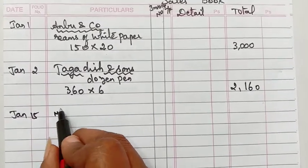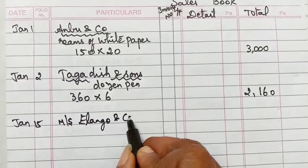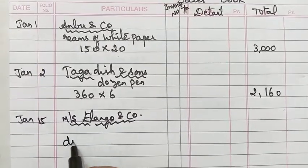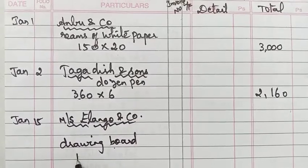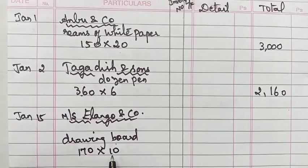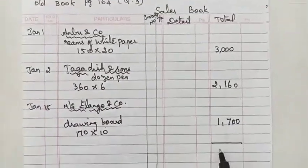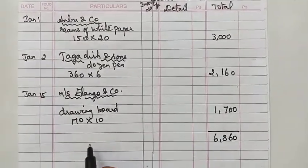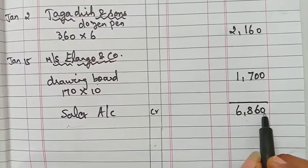The next date is January 15th — Mrs. Elango and Co. We are getting drawing boards from this company. 10 drawing boards at 170 rupees each. 170 into 10 gives us 1,700. If we add all of this, we get 6,860. So we will write it as Sales Account credit — 6,860. That is all.